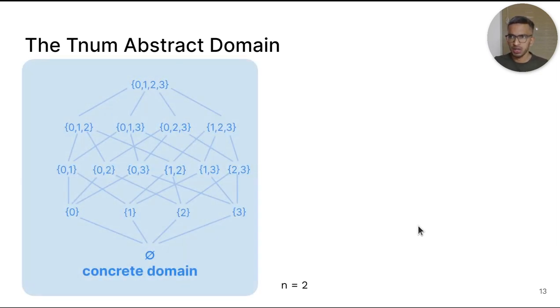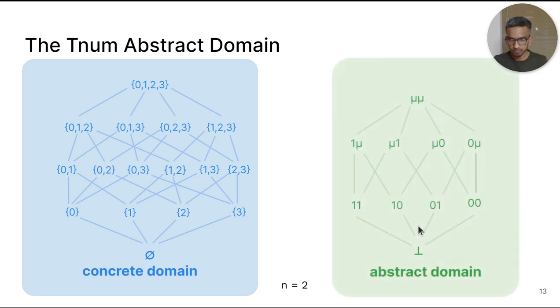Elements of the concrete domain, the power set of integers, form a partial order with a subset relation as the ordering relation among them. An arrow from a lower element to a higher element means that the lower element is a subset of the higher element. Elements of the abstract domain also form a partial order. For example, 1 mu is visualized as containing the TNUM 11.